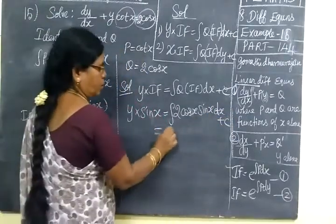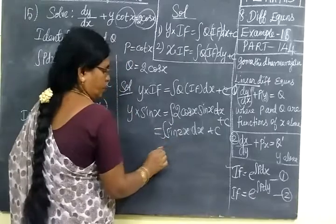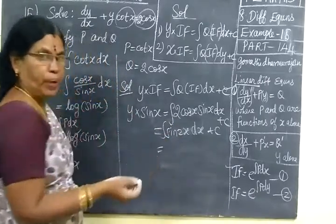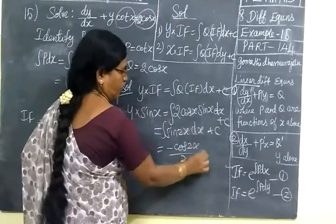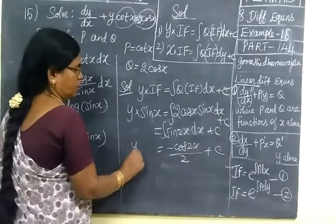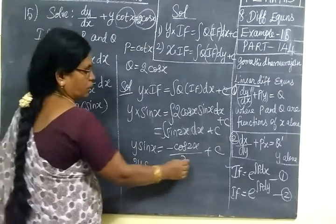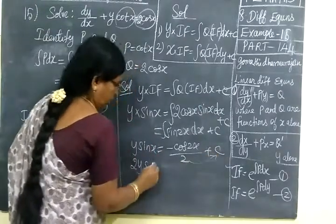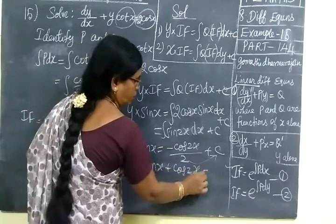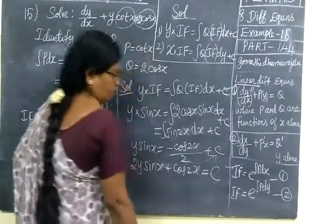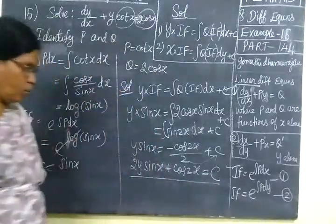The integral of 2·sin(x)·cos(x) is nothing but sin(2x). Integrating sin(2x) gives minus cos(2x)/2. So y·sin(x) = minus cos(2x)/2 plus c. Taking the 2 to the other side gives 2y·sin(x) = minus cos(2x) plus 2c. Writing 2c as c, so 2y·sin(x) plus cos(2x) equals c.